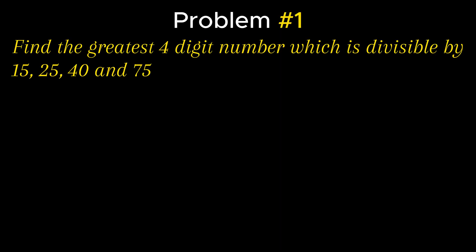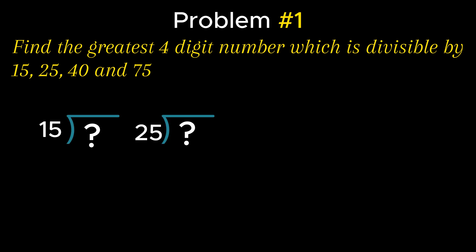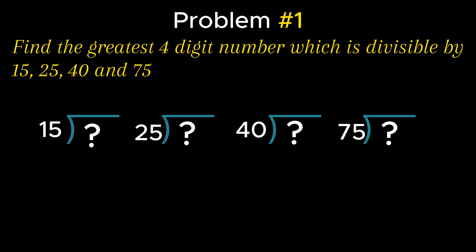Let's start with the first problem. Find the greatest four-digit number which is divisible by 15, 25, 40, and 75. As per the understanding of the problem, if the number is divisible by 15, 25, 40, and 75, then the number must be a multiple of these numbers — that is, the number must come in the table of 15, 25, 40, and 75.